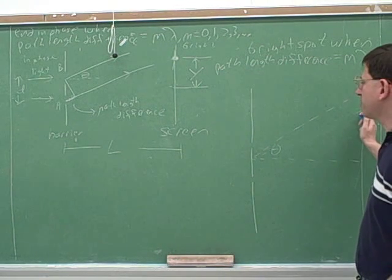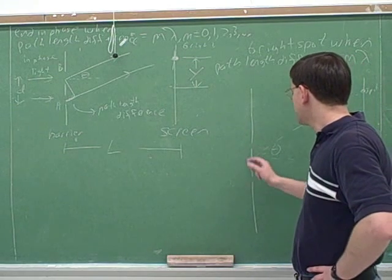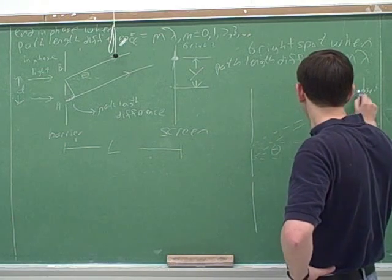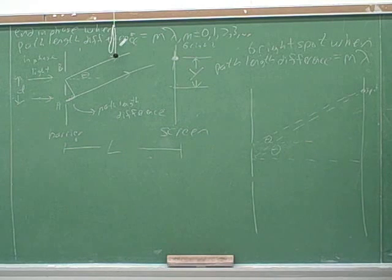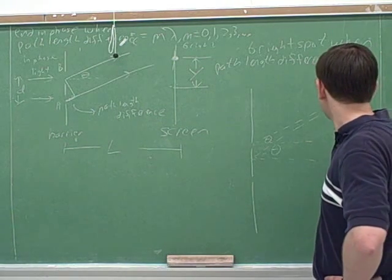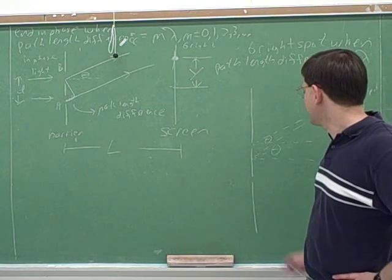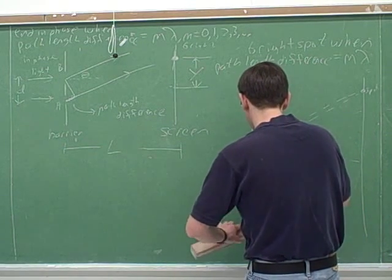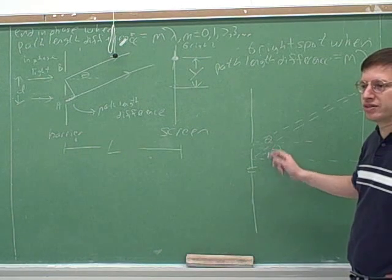However, when the screen is very far away from the barrier, and when the slits are very close to each other, this angle is approximately theta. So we're going to be using a lot of approximations here. As long as the screen is far enough away, and if d, the distance between the slits is very small, then all these little angles here turn out to be pretty close to each other.